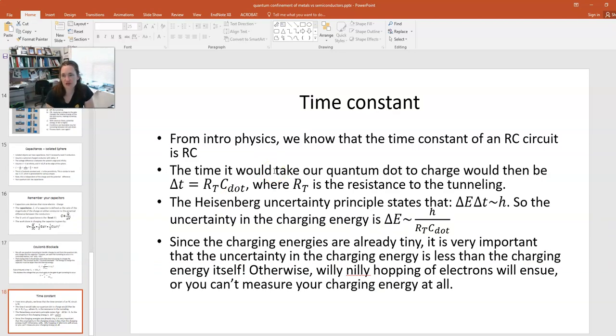Now one other thing that you want to think about is the time constant. From introductory physics, you know that you have an RC circuit. And it takes a little time to get your RC circuit charged up and to discharge. The time constant is equal to the resistance times the capacitance. So for our little quantum dot, the time that it would take us to charge would be delta T is equal to R sub T times the capacitance of our dot, where R sub T is the resistance to the quantum tunneling.